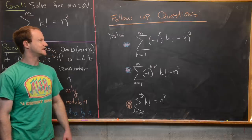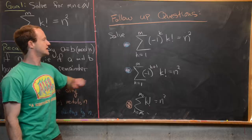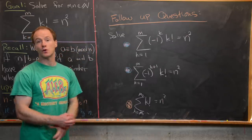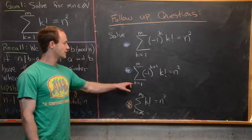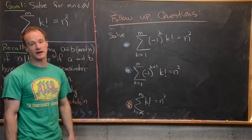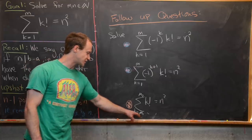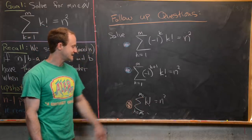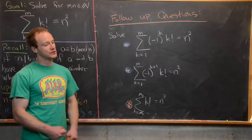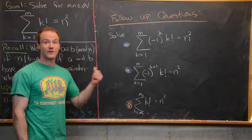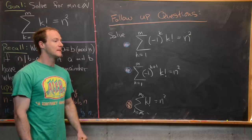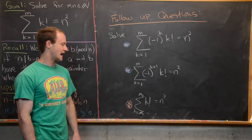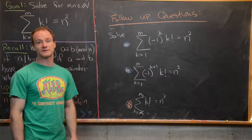Here are some nice follow-up questions solvable in a similar manner. First, what if the sum is alternating: sum from k=1 to m of (-1)^k · k! — when is that a perfect square? Second, what about sum from k=1 to m of (-1)^(k+1) · k!? And what if we start the sum at a different point: sum from k=m₁ to m₂ of k! when is that a perfect square? The interesting case is starting at 0, which adds 0!=1 and changes the residue mod 5 to 4 instead of 3, so the same trick wouldn't apply.